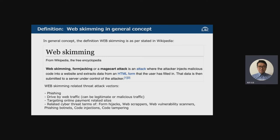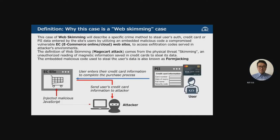In general, the definition of web skimming as stated in Wikipedia is that web skimming-related threats are coming from phishing or others. This specific crime method is used to steal users' credit card data entered by site users, by utilizing an embedded malicious code on a compromised vulnerable EC website, injecting malicious JavaScript so that the user's credit card information would be sent to the attacker.